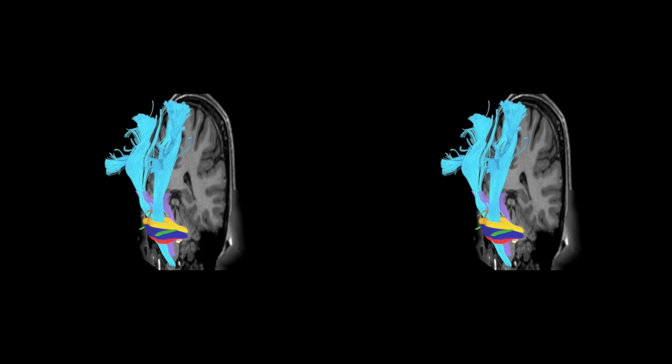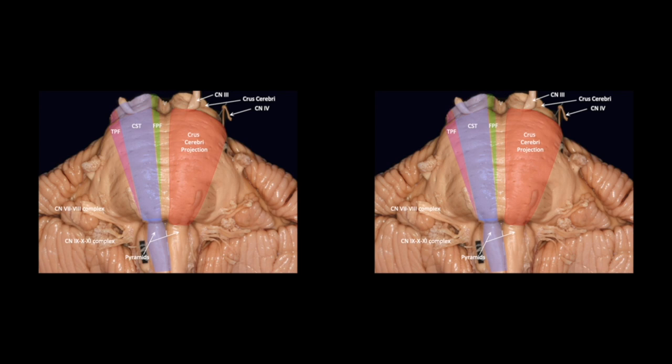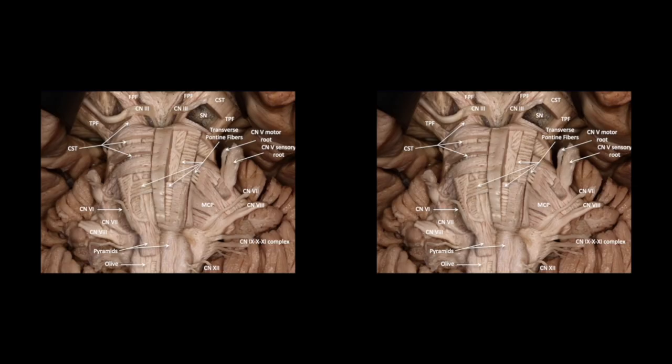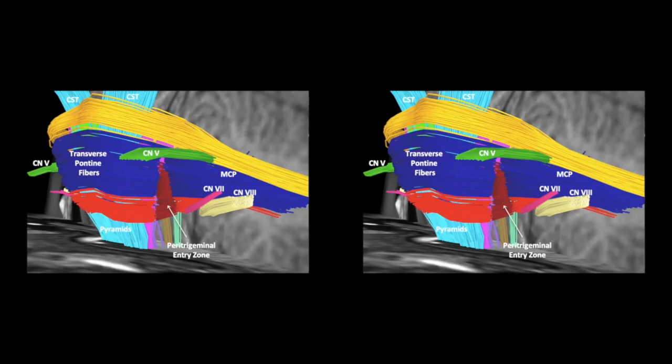A critical component for planning an approach to a brainstem cavernous malformation is the location of the corticospinal tracts. It is useful to remember that the cerebral peduncle projections taper throughout the pons, with mainly corticospinal fibers transitioning to the pyramids at the pontomedullary fissure, as the temporopontine and frontopontine fibers synapse throughout the pons. It is also useful to remember that the exit zone of the abducens nerve is a good approximation for the lateral border of the pyramids.